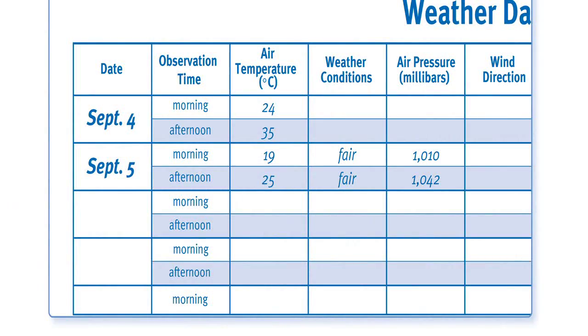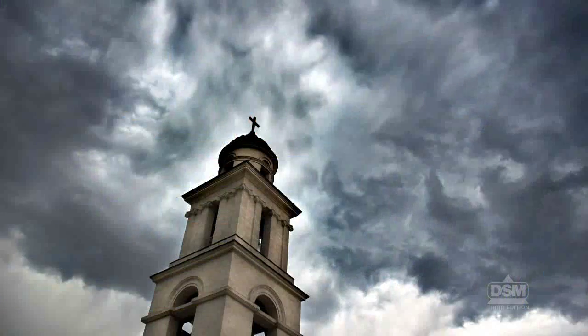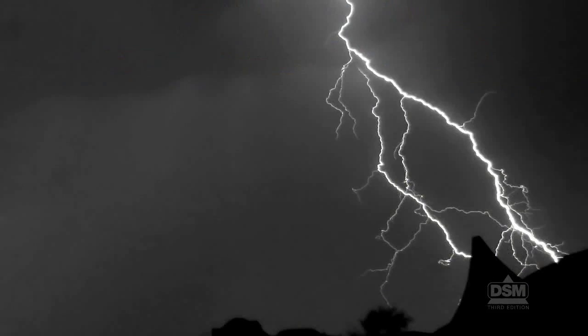Have one student record the air pressure reading in the appropriate column on the class weather data chart. To conclude Session 1, tell the students that they will also record observations of the weather conditions twice each day, along with their observations of air pressure and temperature for 12 days. Some example observations are cloudy, fair, stormy, or windy.